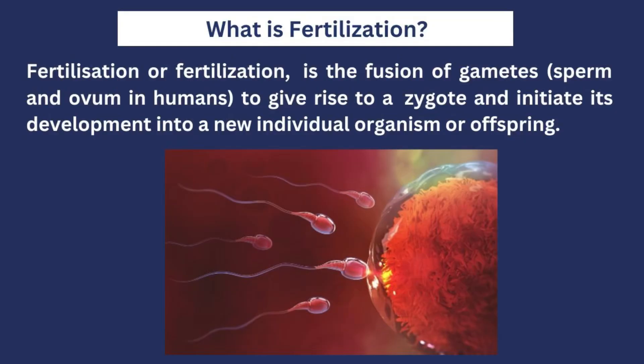First, let us talk about what fertilization is in very simple terms. Fertilization is a process by which the egg of the female — which is the ovum — and the male sex cell — which is the sperm — come together to form what is called a zygote. This process actually happens during ovulation, which is a phase during the menstrual cycle. I'm not here to discuss the menstrual cycle — if you want me to make a video on that, let me know in the comments. I'm just going to talk about how the egg and the sperm fuse together up to the point that it becomes implanted in the uterus.